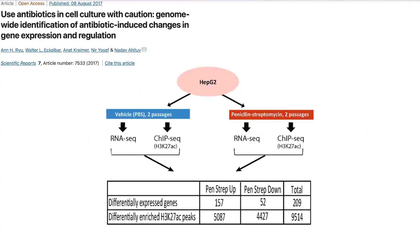A paper that highlights this treated cells with penicillin-streptomycin or without any antibiotics, then looked to see what RNAs and messenger RNAs were being made — so what genes were being expressed — in a couple of different ways: by looking at the RNA as well as looking at the accessibility and regions of activity on the DNA itself.